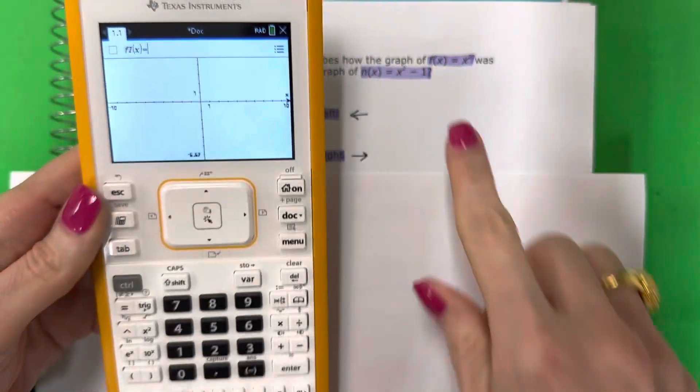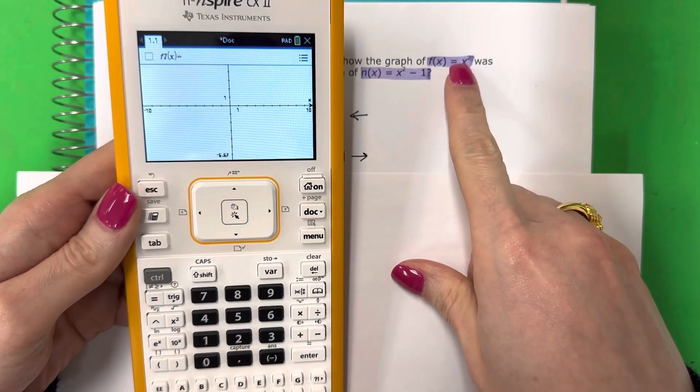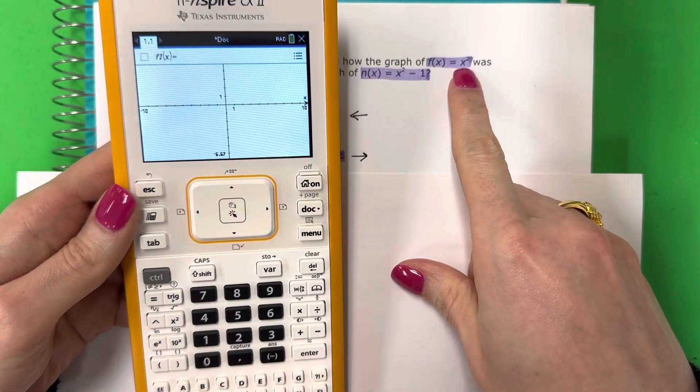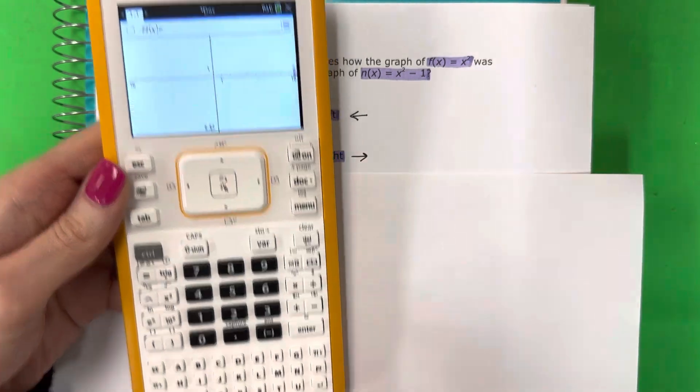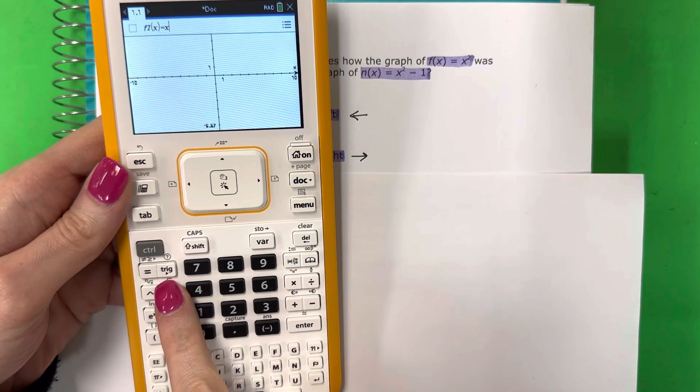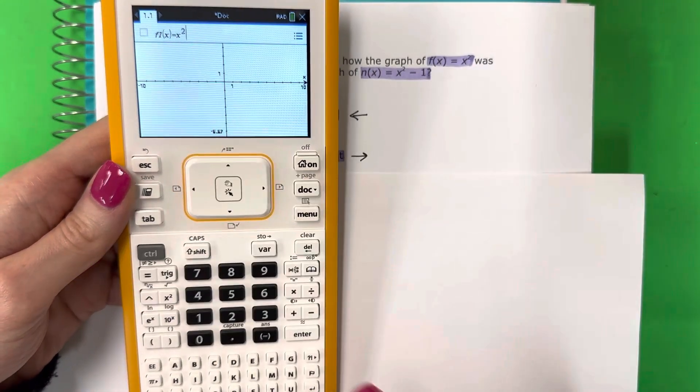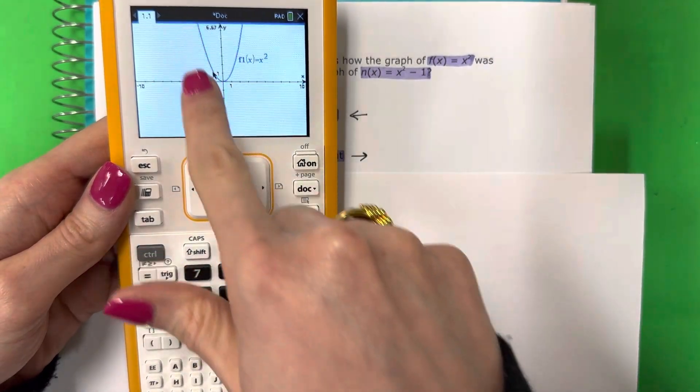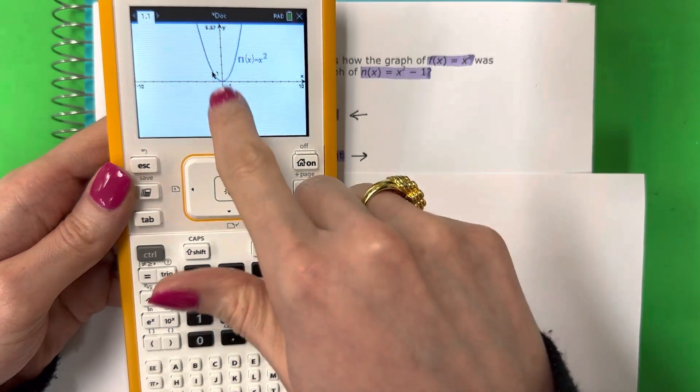Let's put the original first. Vamos a poner la original primero. This is x squared. Es x cuadrado. So go ahead and push x. Here's x. And then squared is right over here. X squared. Go ahead and push enter. So this is my graph right over here. The blue is my original. El azul es mi original.